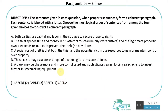The second type involves five lines — the concept is the same but adds complexity. Statement A: 'Both parties use capital and labor in the struggle to secure property rights.' 'Both parties' is a clue — we don't know who they are yet. Statement B: 'The thief spends time and money in his attempt to steal, and the legitimate property owner expends resources to prevent the theft.' This hints at who the two parties are.